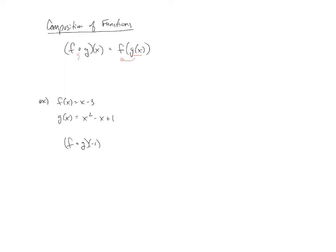Looking at this first example, given two continuous functions, we're told to find f circle g of negative 1, which is the same thing as f of g of negative 1. We'll start with g of negative 1: go find function g and every place you see an x, put a negative 1. We get negative 1 squared minus negative 1 plus 1, which gives us 3. So g of negative 1 is 3. Now replacing g of negative 1 with 3, we have f of 3 — go find function f, put a 3 everywhere you see an x, and we end up with 0.